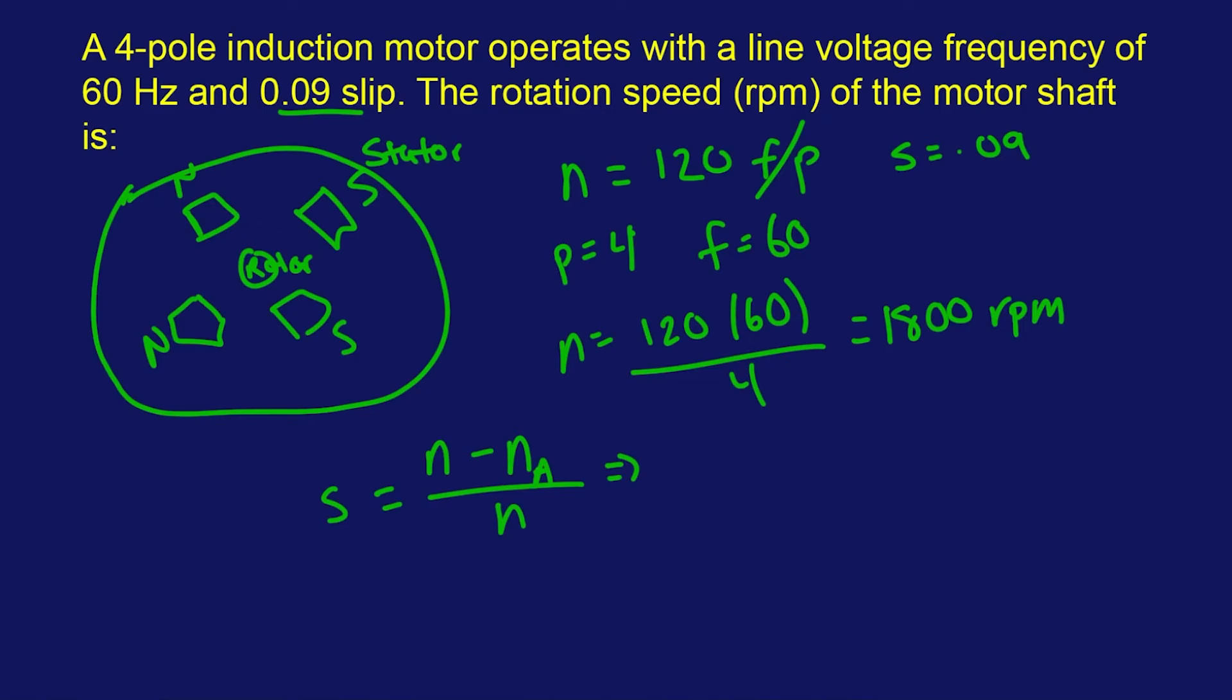So if you do some algebra here, you're going to get SN minus N, but then you do this, and that should give your NA. So you just solve that. So N is 1800. So we can pull that out, and then it's going to be 1 minus S, which is 0.09.